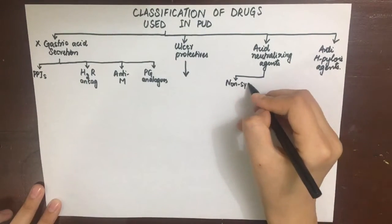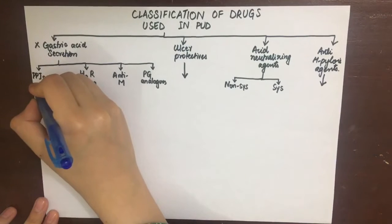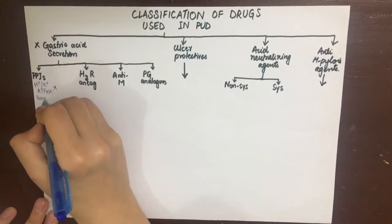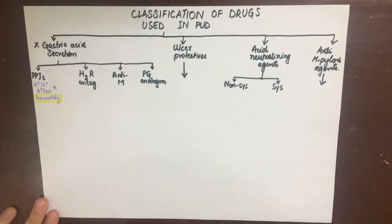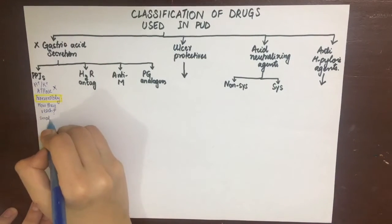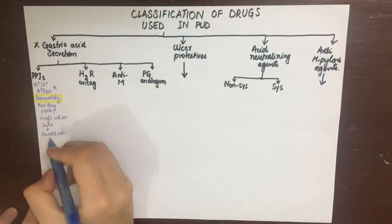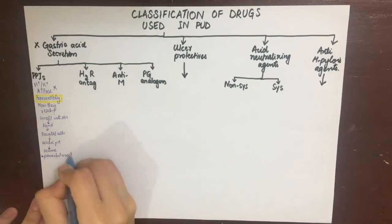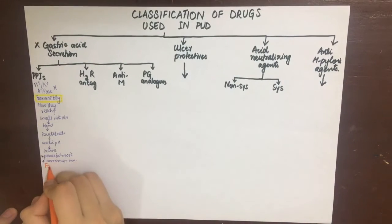Proton pump inhibitors inhibit the proton pump — that is, hydrogen-potassium ATPase — irreversibly. They are non-competitive inhibitors, which increases their duration of action although they have a short half-life. They are absorbed in the small intestine because they are given in enteric-coated tablets. They diffuse to the blood and then diffuse back to the parietal cells, where in the acidic pH they are converted into the active charged form known as sulfenamide. They are the most powerful and most commonly used drugs for peptic ulcer.